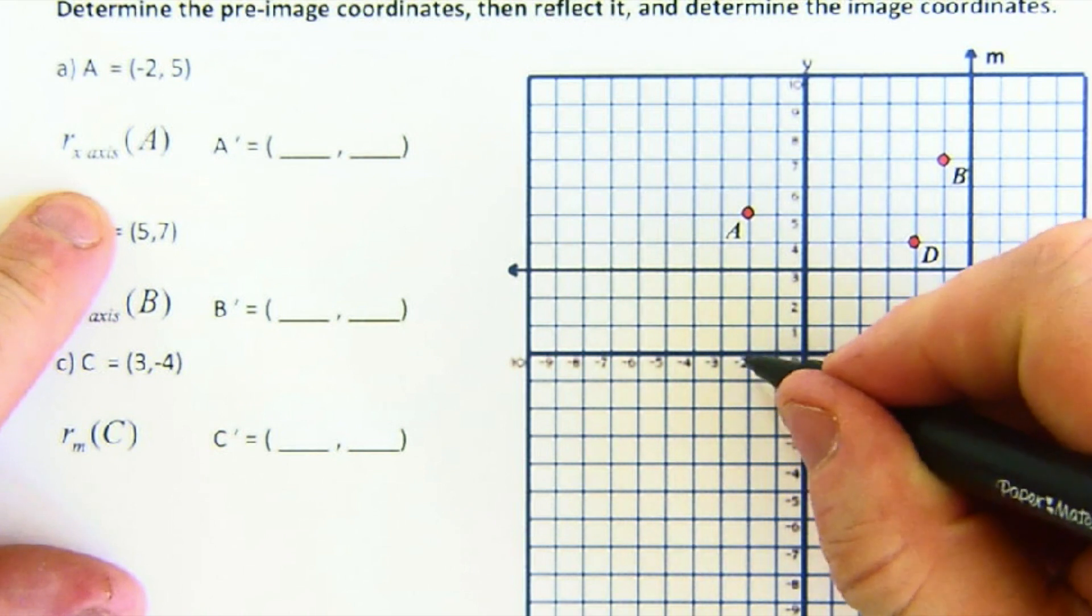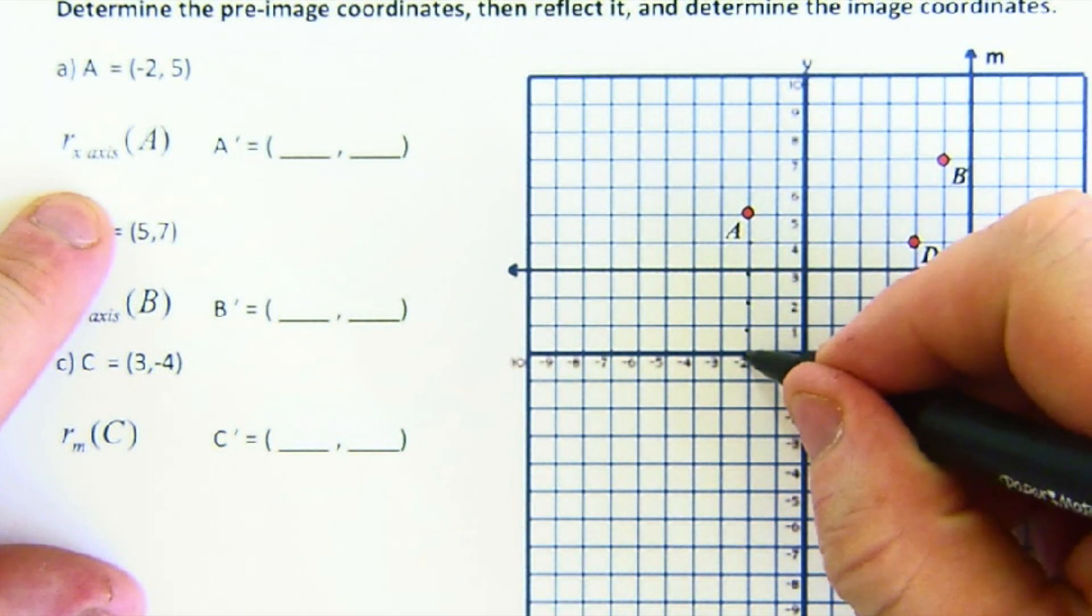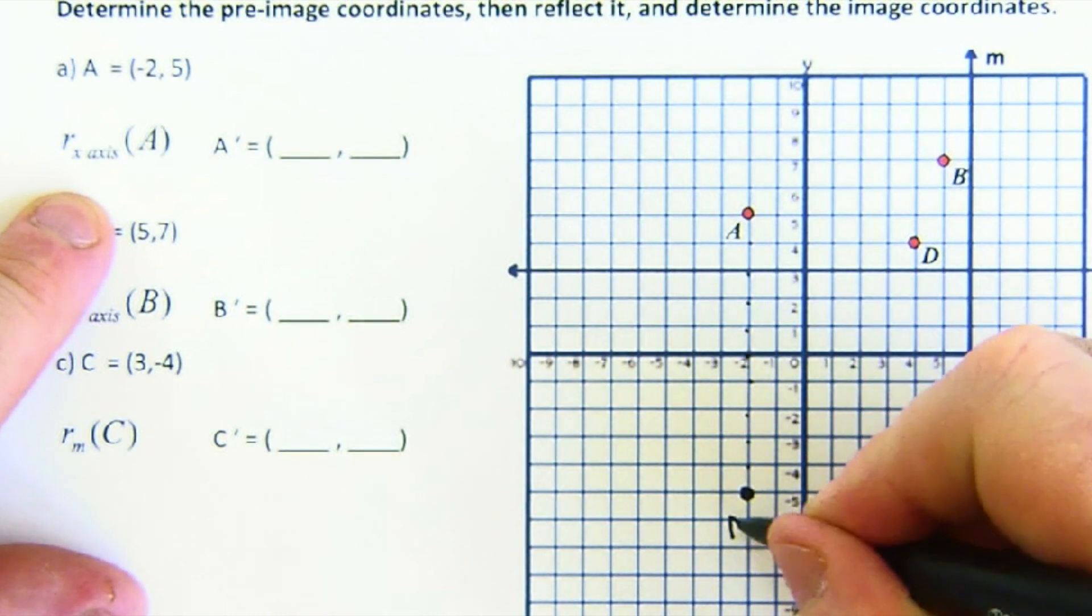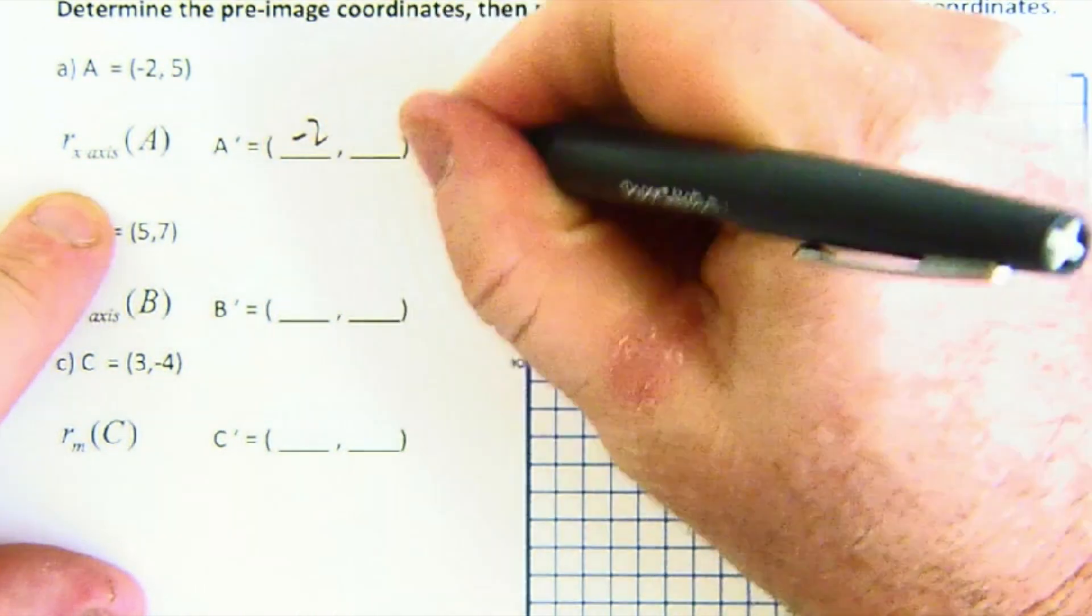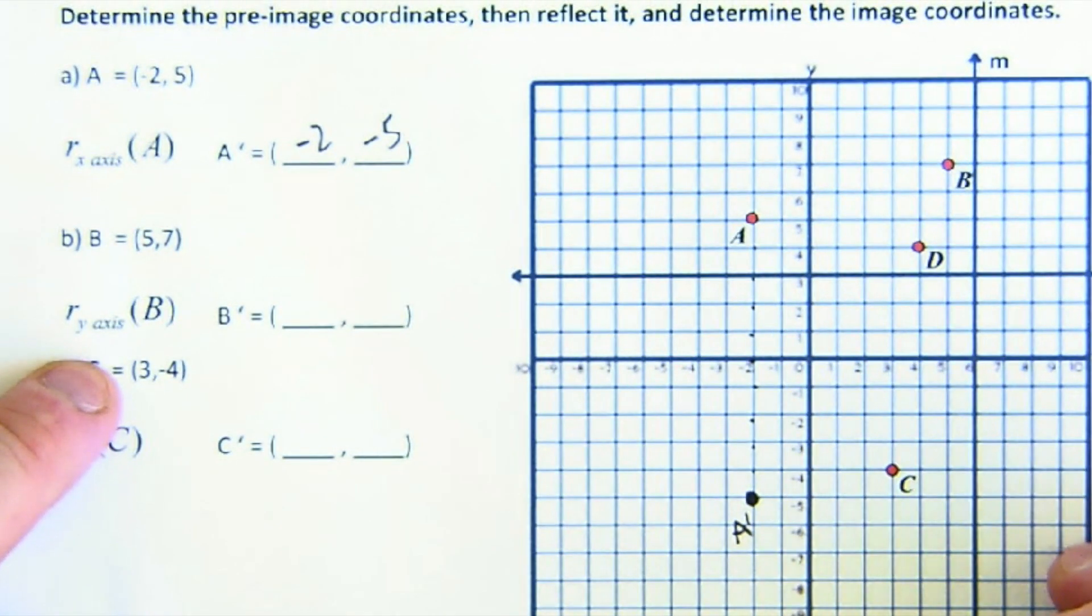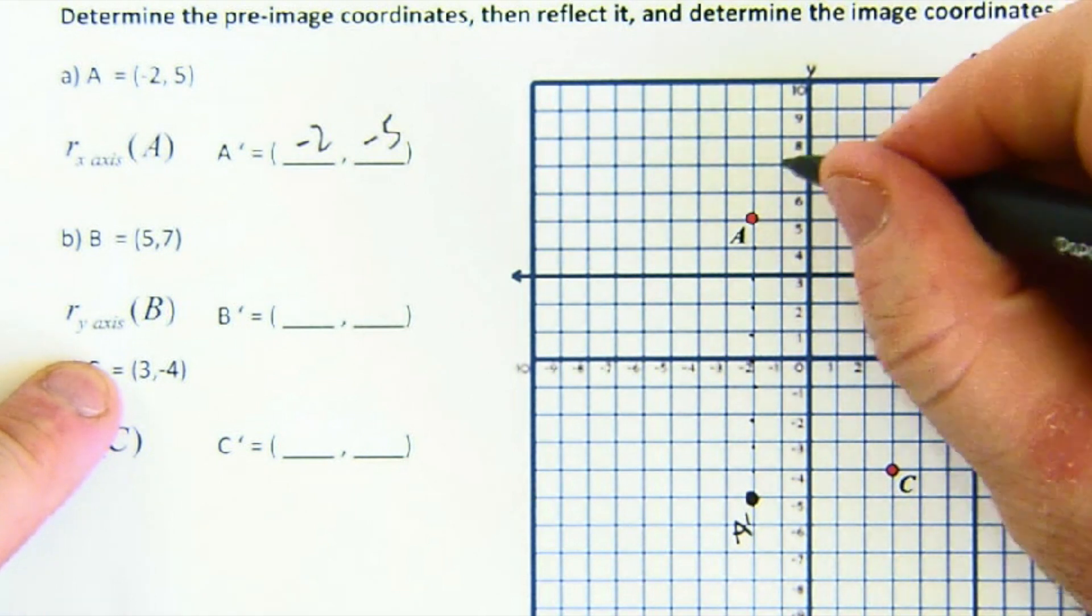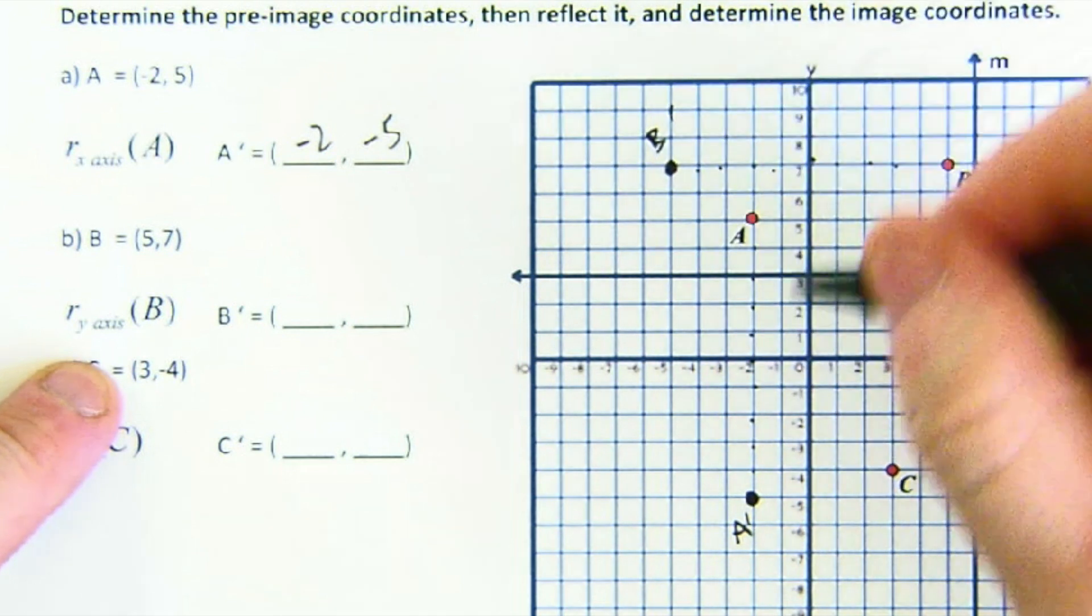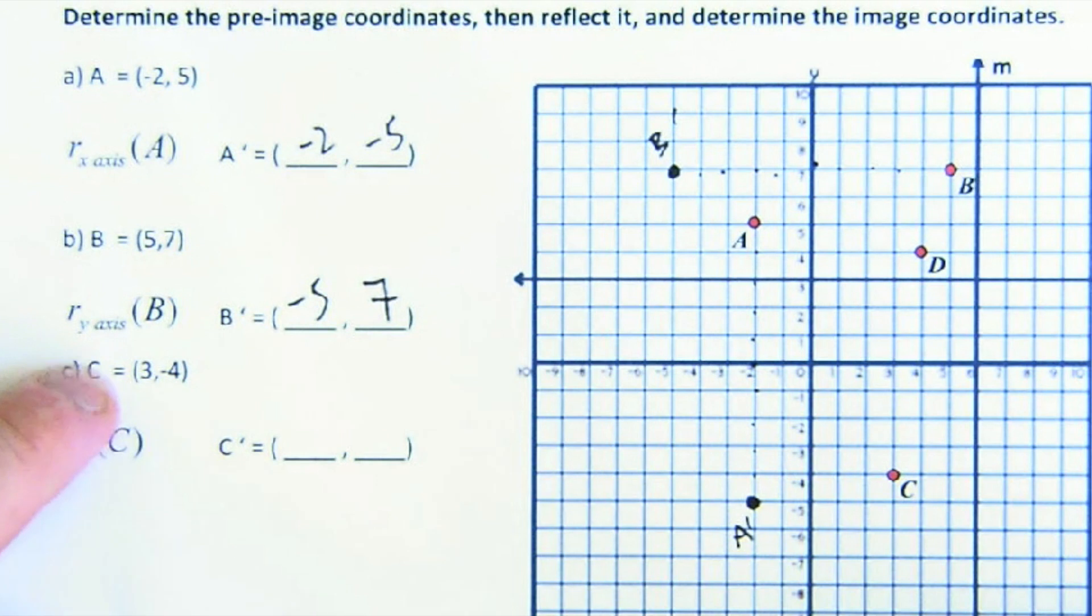So the x-axis is down here. A is one, two, three, four, five—so one, two, three, four, five. A prime is here at negative two and negative five. This says reflect over the y-axis. The point B: one, two, three, four, five; one, two, three, four, five. There's B prime at negative five and seven.